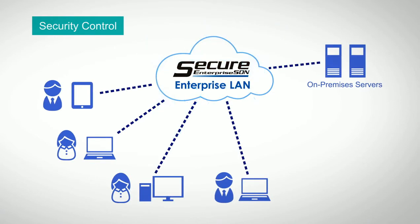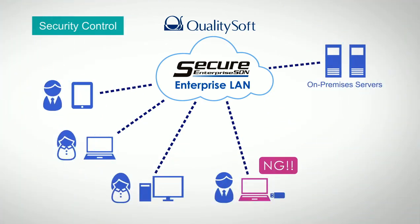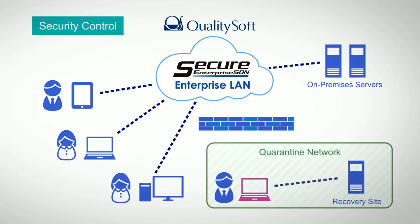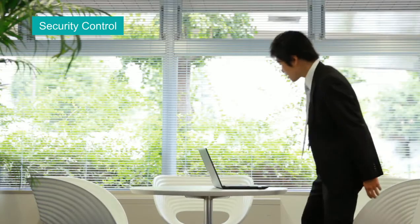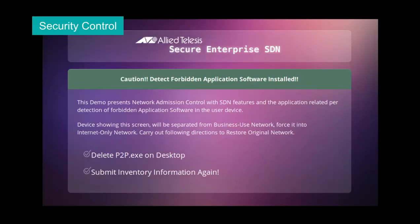However, SCS guarantees much stronger security compared to legacy measures. When SCS detects and identifies the infected device, which has installed banned software that violates the security policy, the device is automatically isolated in a quarantine or recovery network. This feature prevents the spread of damage and enables the operation of a higher-level secure network.